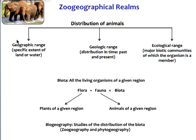Geographic range means the specific extent of land or water in which the animal resides. Geologic range means studying the distribution of animals in time — that is, past and present. Ecological range means the major biotic communities of which the organism is a member.